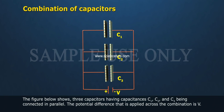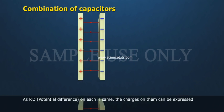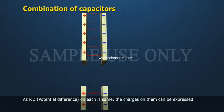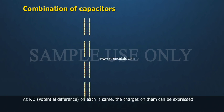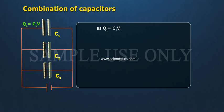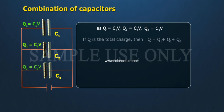The potential difference applied across the combination is V. As potential difference on each is same, the charges on them can be expressed as Q1 equals C1 V, Q2 equals C2 V, Q3 equals C3 V. If Q is the total charge, then Q equals Q1 plus Q2 plus Q3.